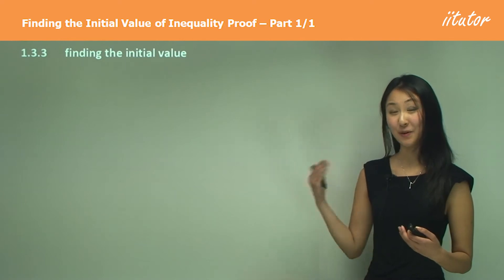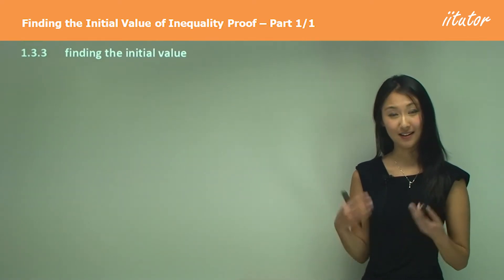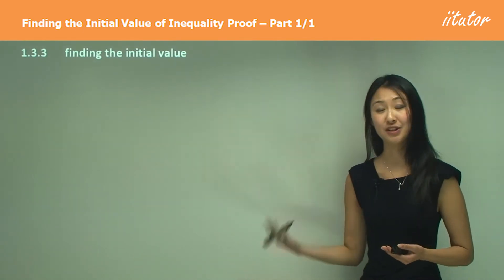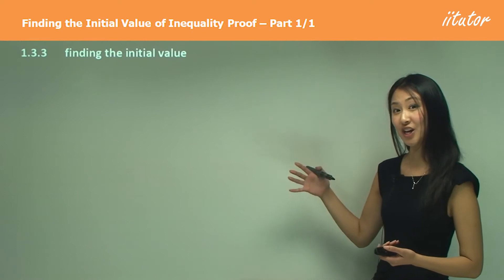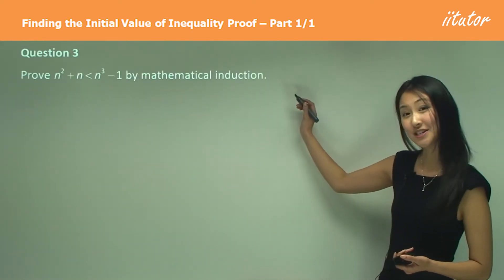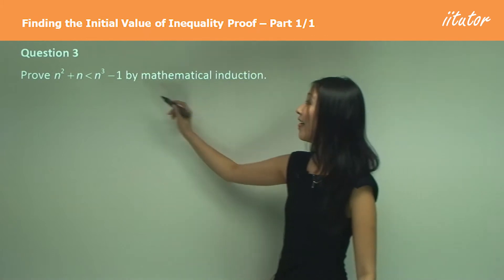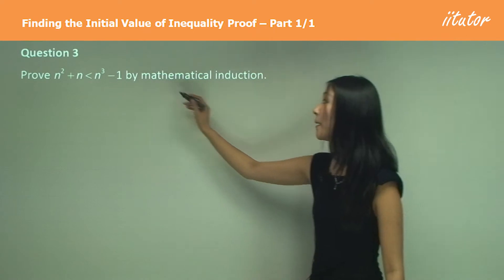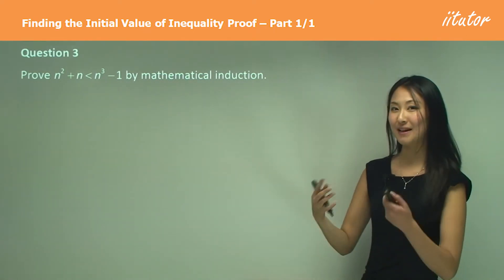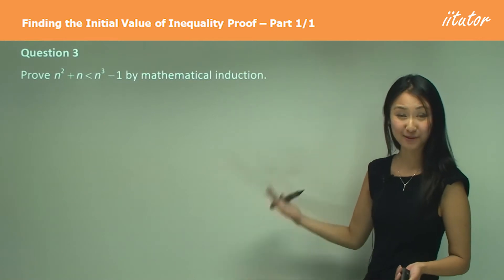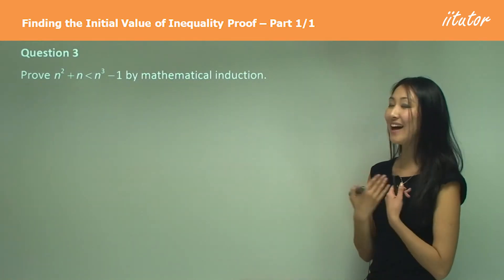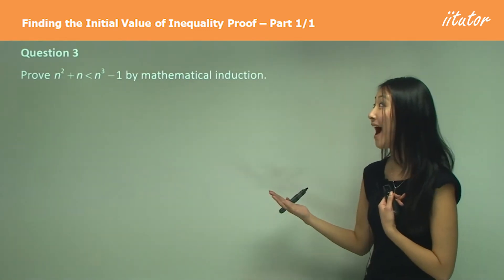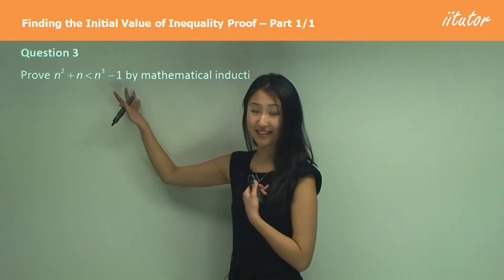So far in our questions with inequalities we've always been given the initial value — we've always been told that n must be greater or equal to a certain number. Now we're going to work with a question where it doesn't tell us this. In question 3 we want to prove that n squared plus n is less than n cubed minus 1 by mathematical induction, and you'll notice a big gap here — it has not told you what n must be greater or equal to. That means we have to test out numbers and find out when the left-hand side is less than the right-hand side.